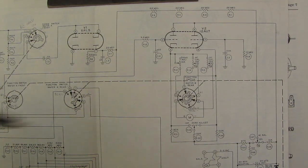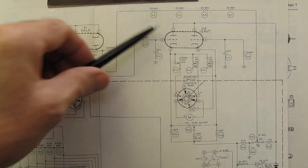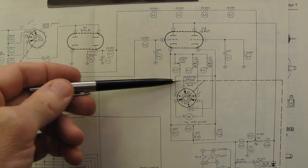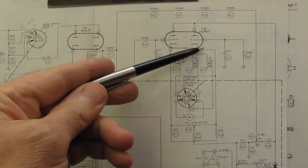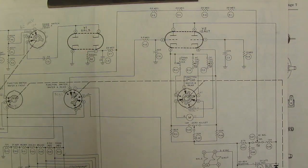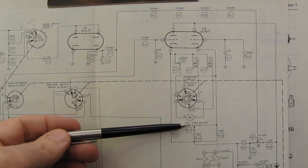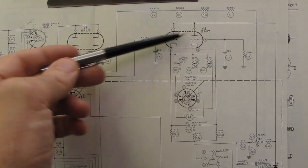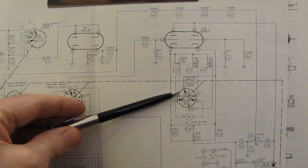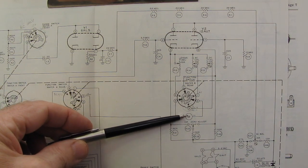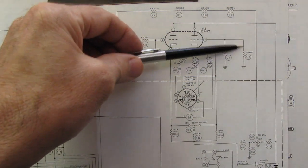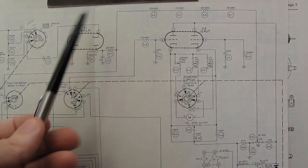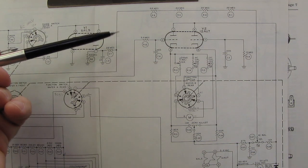So here we are, this is the bridge circuit that controls the meter, the meter's right here. And the meter is connected through this switch and through some resistors to the two cathodes here. And the way it works is the bridge zero balances here, it balances the current on these two cathodes.